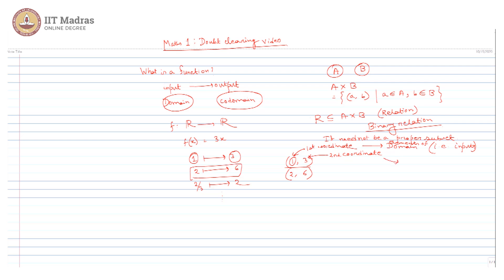The second coordinate denotes elements from the range — the range is basically the set of outputs. So in general notation for this function we can write it as x comma 3x, meaning when I am taking some input x I am getting my output as 3x. This is the general notation for a function — that's how we relate a function with a relation.